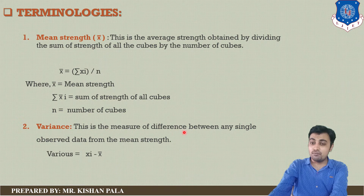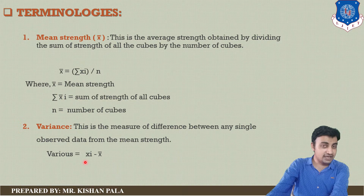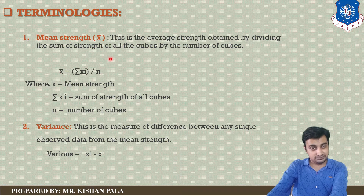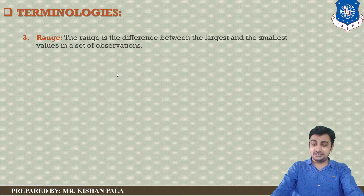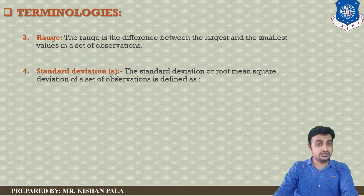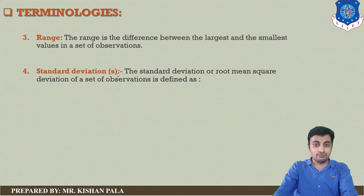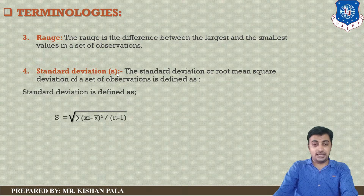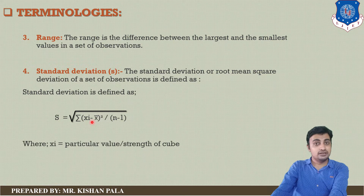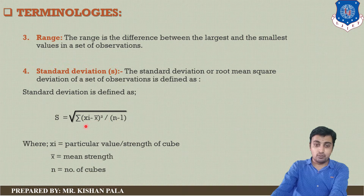The second terminology is variance. This is the measure of difference between any single observed data from the mean strength — that is, xi minus x-bar, where xi is the particular observed data and x-bar is the mean strength. Next is range, which is the difference between the largest and smallest values in the set of observations. Next is standard deviation, denoted by s. The standard deviation (root mean square deviation) is defined by the equation: s equals the square root of sigma(xi minus x-bar) squared divided by n minus 1.